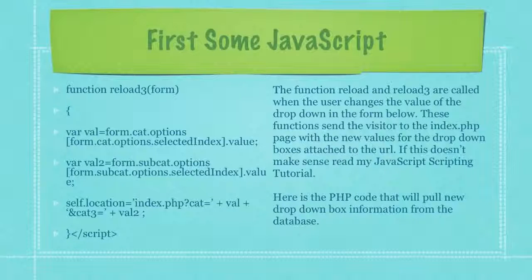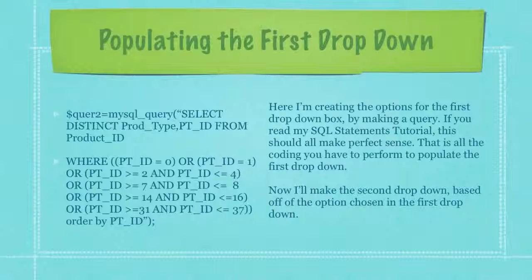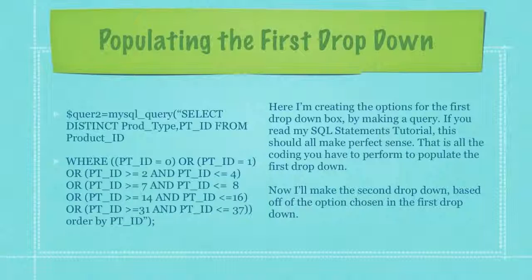Here's the PHP code that will pull new drop-down box information from the database. Here I'm creating the options for the first drop-down box by making a query. If you check out my SQL statements tutorial this should all make perfect sense. That's all the coding you have to perform to populate the first drop-down.